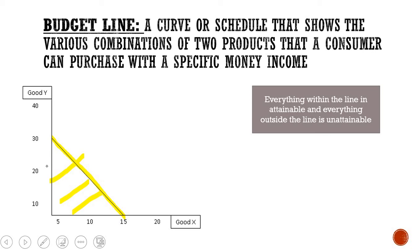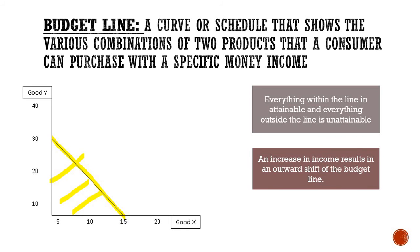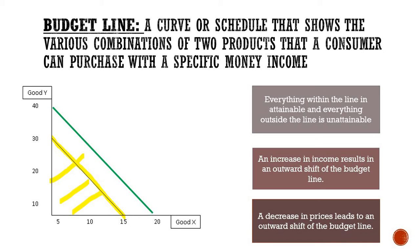Everything outside the line is unattainable because you do not have enough money to purchase those quantities of good X and good Y. Your budget line will shift for two reasons: either a change in income or a change in prices. If there is an increase in income, your budget line shifts outwards. Similarly, if there is a decrease in prices, your budget line shifts outwards — because even though you have the same amount of money, the price decrease means you can purchase more units of each good or service.